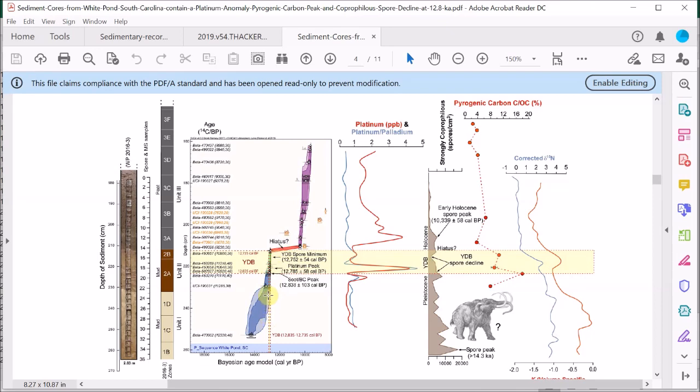The vertical dashed red lines show the expected age range for the Younger Dryas impact.